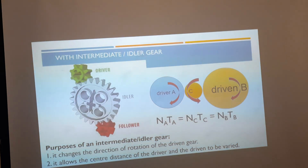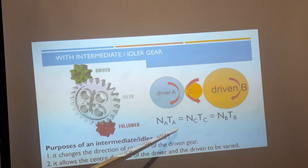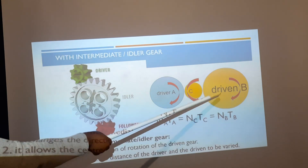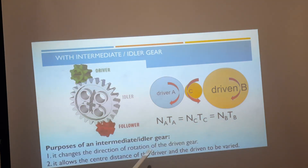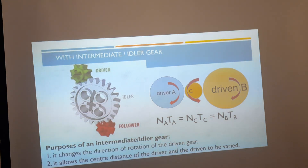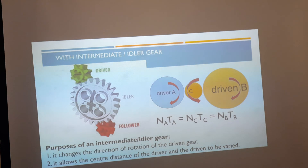The intermediate gear changes the direction of rotation and allows the center distance of the driver and driven to be varied. When you have three gears, the equation is: NaTa = NcTc = NbTb. You will always select two combinations — either A and C, A and B, or C and B — and use those. That is all you need to know about the single gear system. We will now take an example and thereafter look at the compound gear drive.